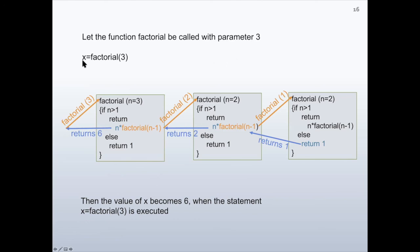Let the function factorial be called with parameter 3. For example: x is assigned factorial(3). The value of n is 3; checking if n is greater than 1 — it is. So it will return n multiplied by factorial(n-1), which is 3 multiplied by factorial(2). This triggers a call to the function itself with n=2.